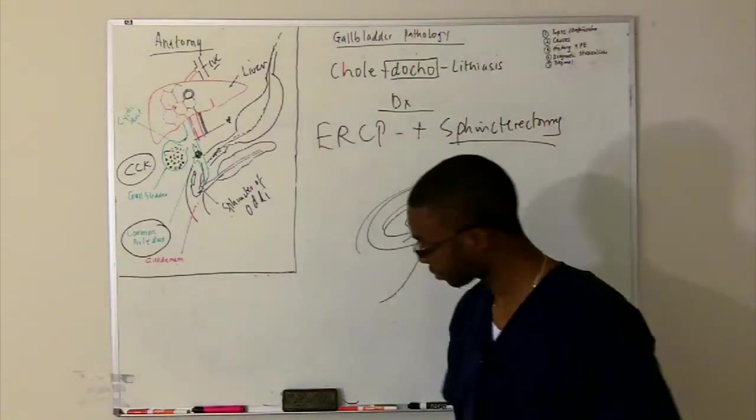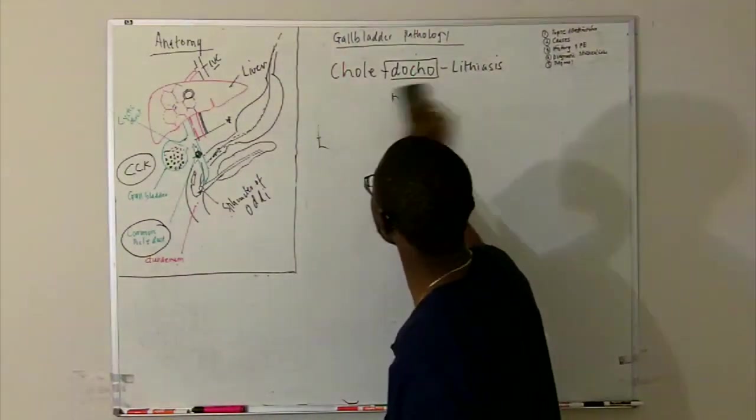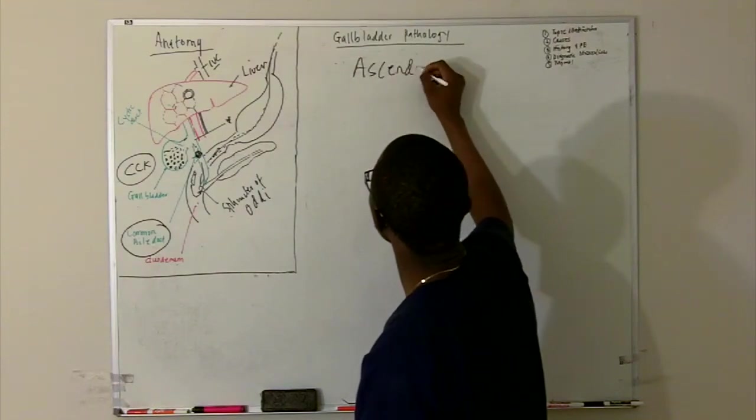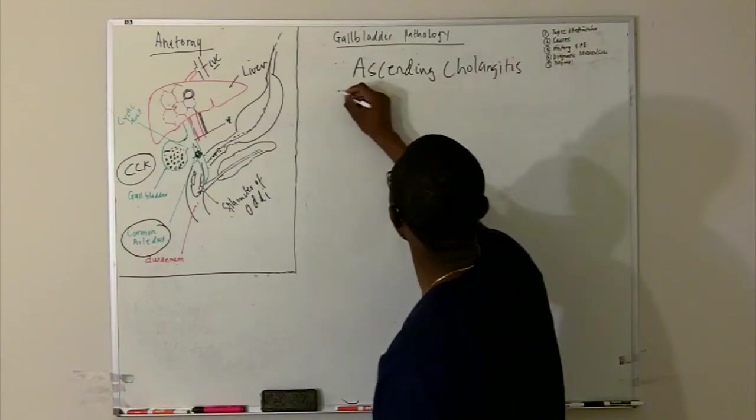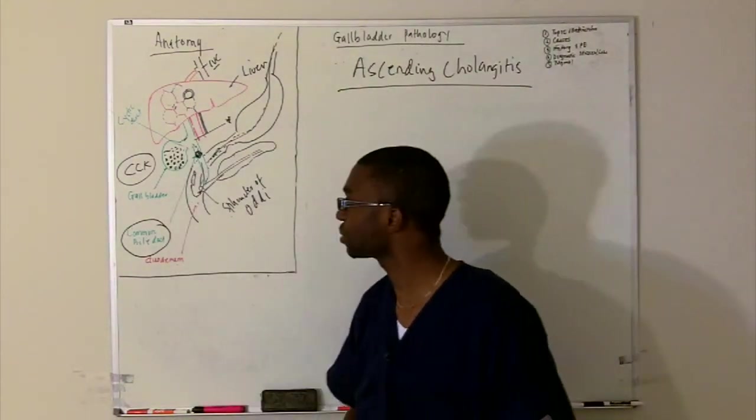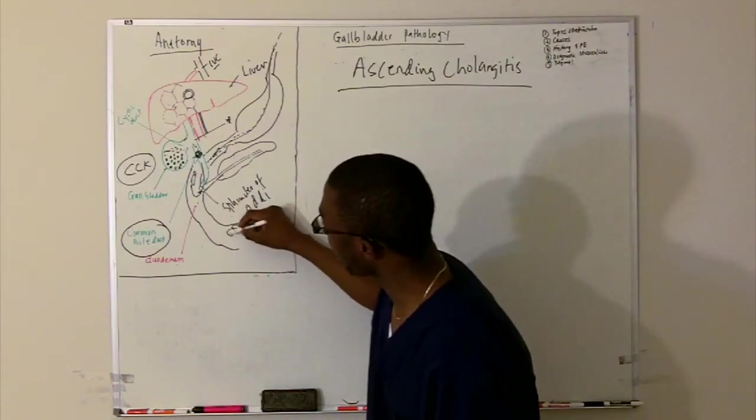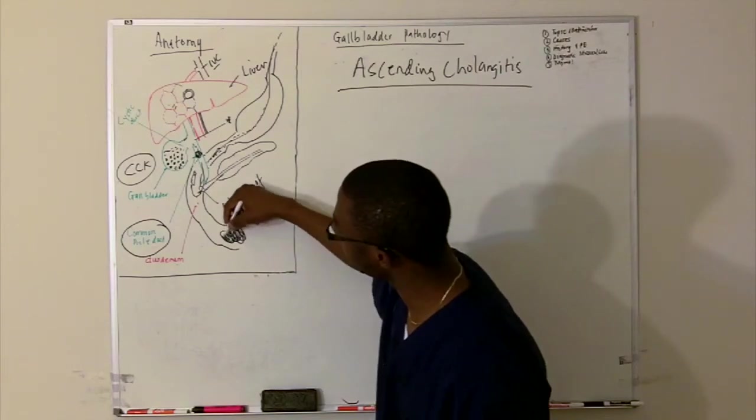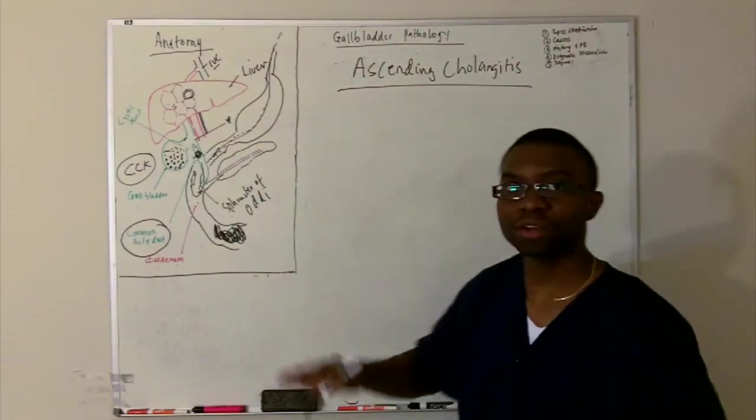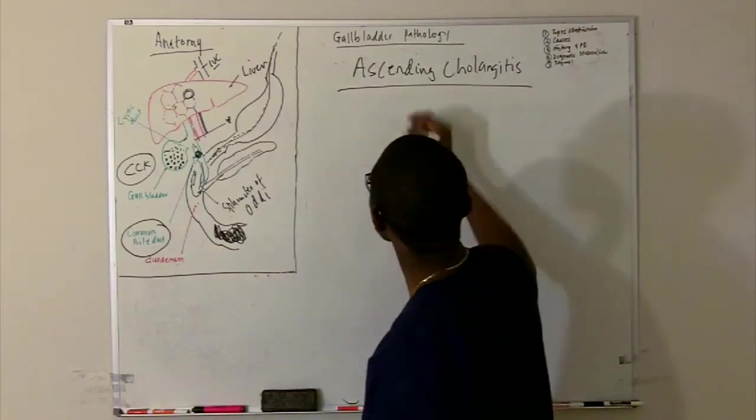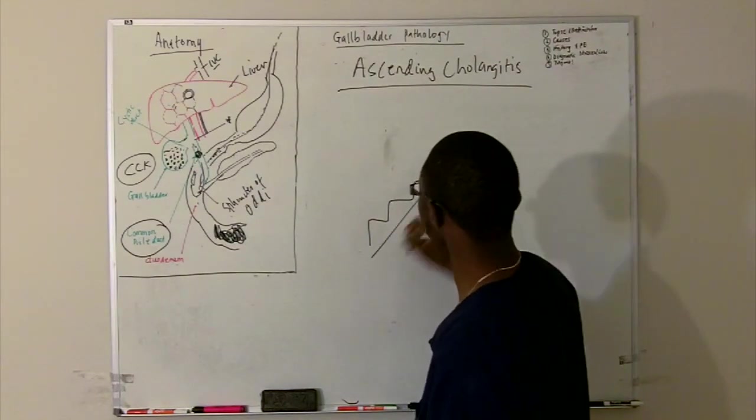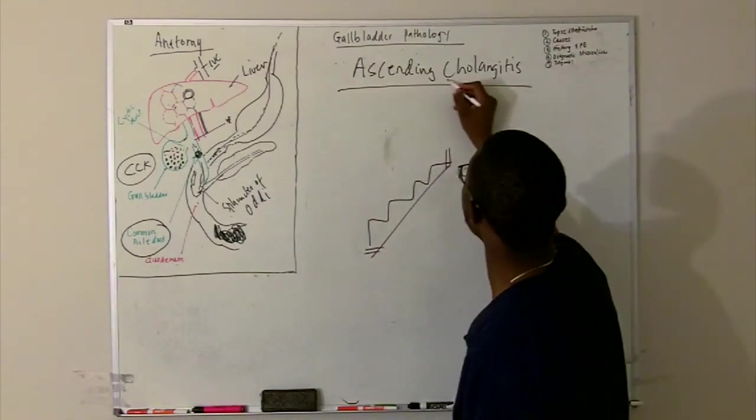Now, because there are complications to choledocholithiasis, we need to talk about those complications. And one of the complications is ascending cholangitis. So, ascending cholangitis. Let's talk about that for a second. This is one of the complications of choledocholithiasis. I'm going to tell you a little story. Let's go back to our picture here. Inside your duodenum is a lot of poop.